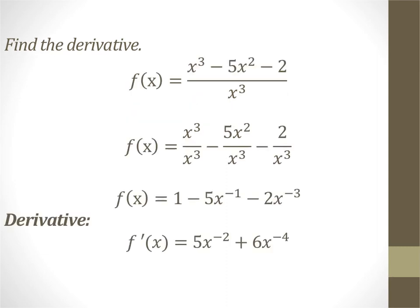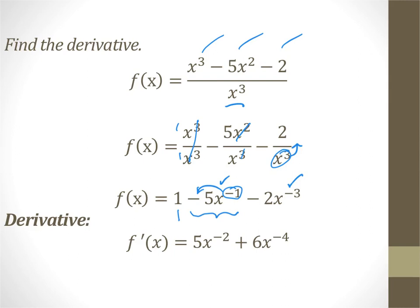You have two ways you can do this one. You could use the quotient rule, but because we have a single term in the denominator, we can split this fraction up into 3 fractions. x cubed over x cubed — one goes into each, so you get 1. Then we take x squared into each piece to get 5 over x, which is really 5x to the negative 1. And then we move the x cubed up and change the sign to be negative. Now we can use the power rule in every one. The derivative of 1 is 0. The derivative of negative 5x to the negative 1: the negative 1 comes down, multiply by negative 5 to get positive 5x to the negative 2. And then bring the negative 3 down to get positive 6x to the negative 4.